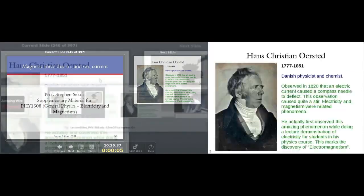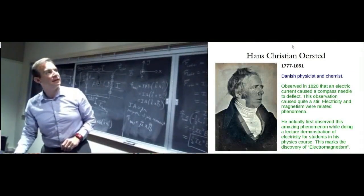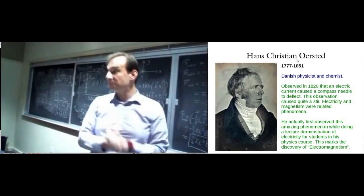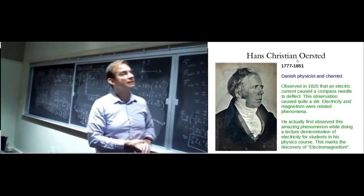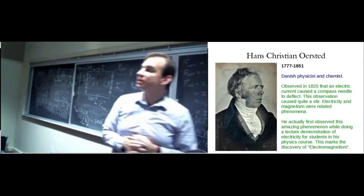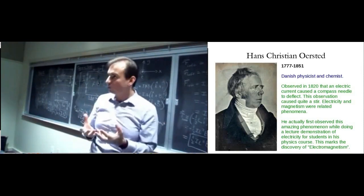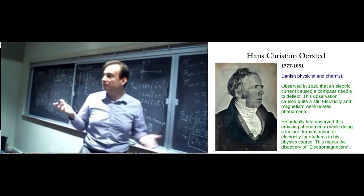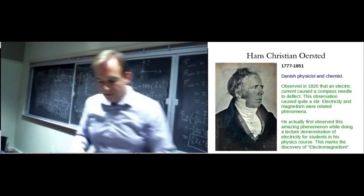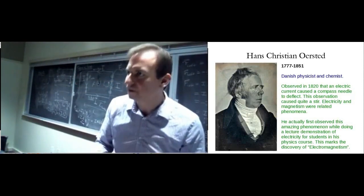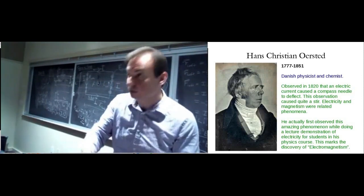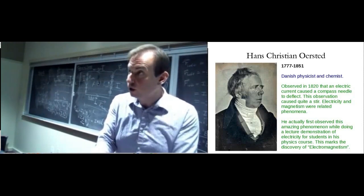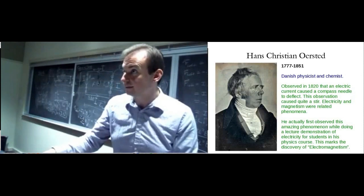Hans Christian Ørsted observed in 1820 that electric current caused a compass needle to deflect — a basic, simple observation of the natural world that caused quite a stir when he published his results. Anyone could reproduce it with an electrochemical cell, some wire, and a compass needle. The reason I can only do this a few times is that this copper wire circuit has very little resistance — no light bulb — so a large current of around one or two amps flows straight back to the power supply, effectively shorting it.